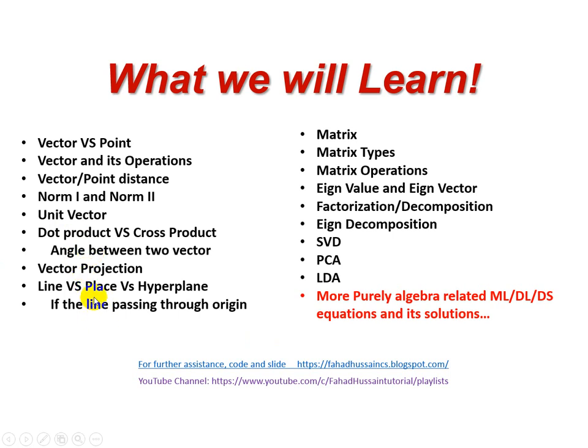In this way we will also know what kind of vector dot product and cross product vector operations we will know. Angle between vectors, vector projections, line, plane and hyperplane. If the line passing through the origin, then line, plane and hyperplane which way will work. Similarly, Matrix, Metrics, what can happen, Eigenvalues, Eigenvector concept theoretically, practically with real life example. Factorization decomposition, Eigen decomposition, in this way decomposition, SVD, PCA Principal Component Analysis, LDA and purely algebraic equations for Machine Learning, Data Science, Data Analyst. In this way we will discuss all the things in the upcoming sessions.